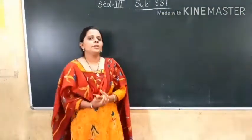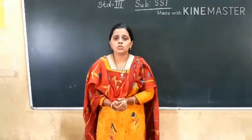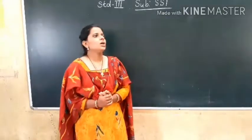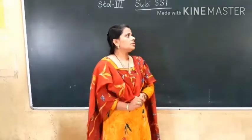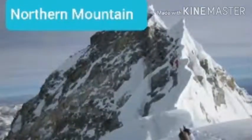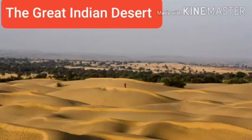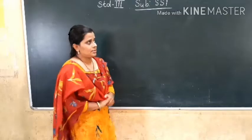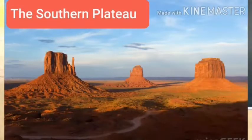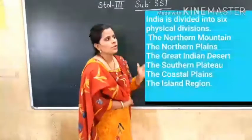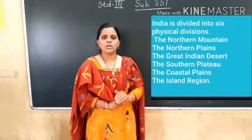Now we are going to learn the six physical divisions of India. The first division is Northern Mountains. The second is Northern Plains. The third is the Great Indian Desert. The fourth is the Southern Plateau. The fifth is Coastal. And the sixth is the Islands. We will discuss all these six physical divisions one by one in the next video.